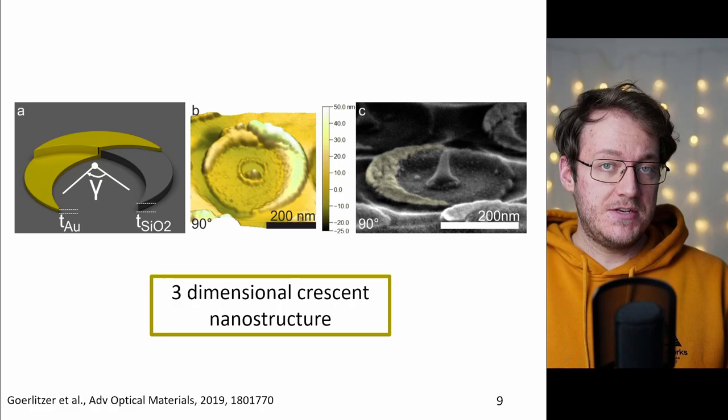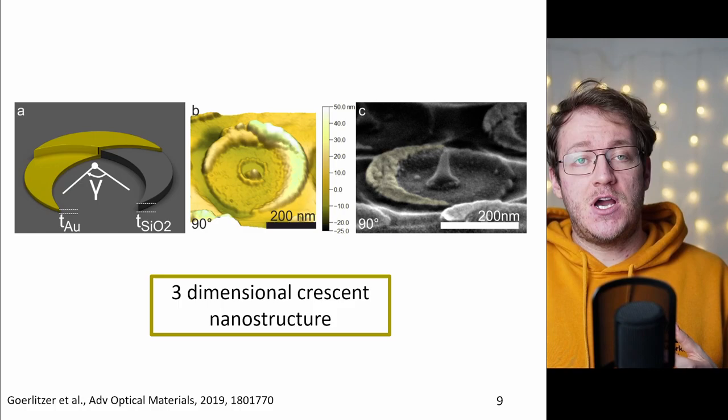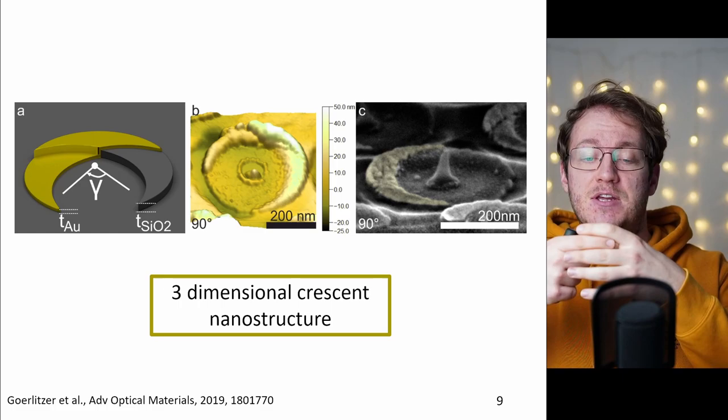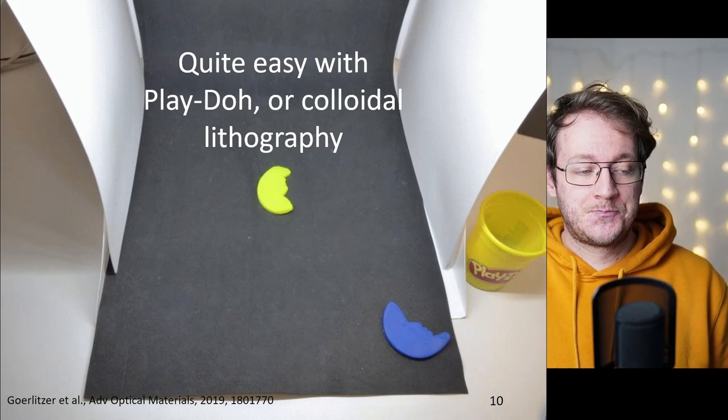Now what I talk about today will be about a chiral crescent. This is a split-ring resonator that becomes chiral because we are introducing a silica step underneath the gold crescent and by that we are lifting half of it up and by this we are breaking the mirror symmetry.